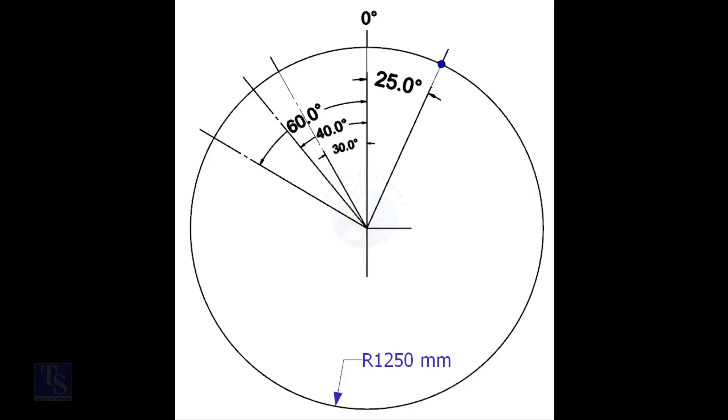Mark the zero-degree line. As per the drawing, zero-degree is rotated 25-degree anticlockwise from the center of the weld joint.